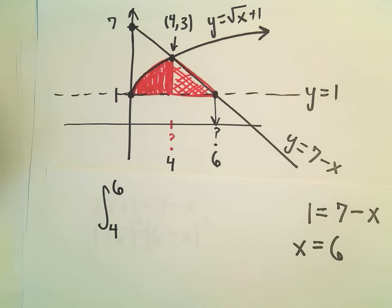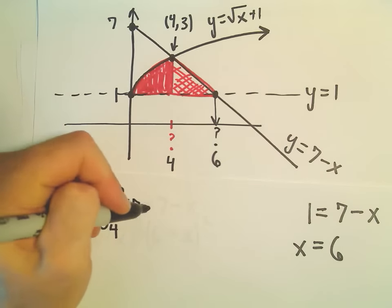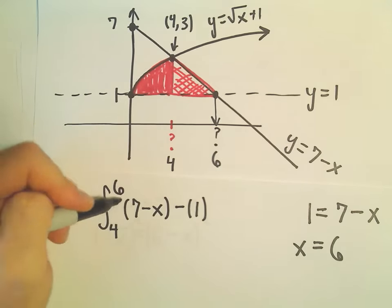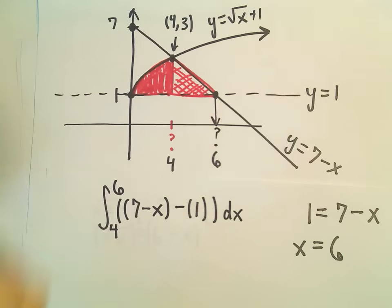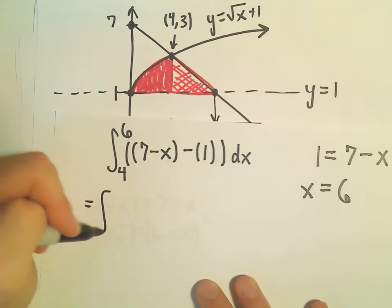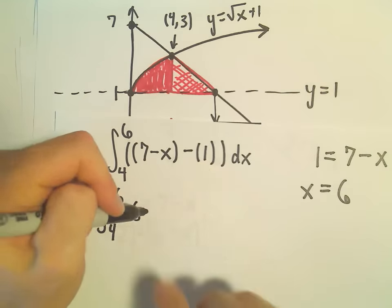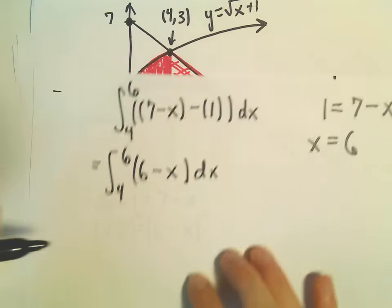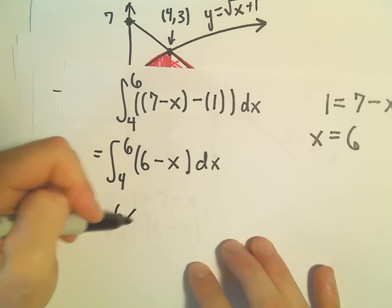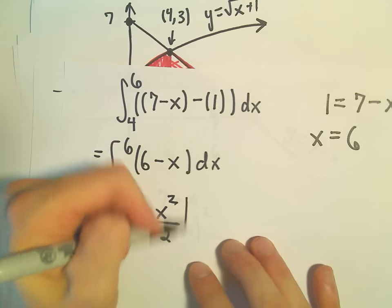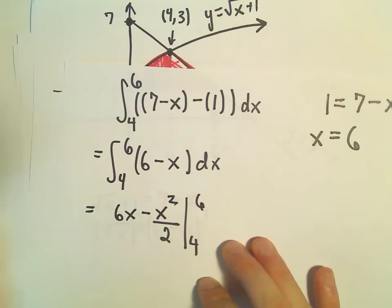So now we've got our limits of integration. We'll take the top function, which is 7 minus x, subtract away the bottom one, which is just y equals 1 dx. So we're just integrating from 4 to 6, we'll get 7 minus 1, we'll just be left with 6 minus x. So when we integrate, we'll get 6x minus x squared over 2, and then from 4 to 6.